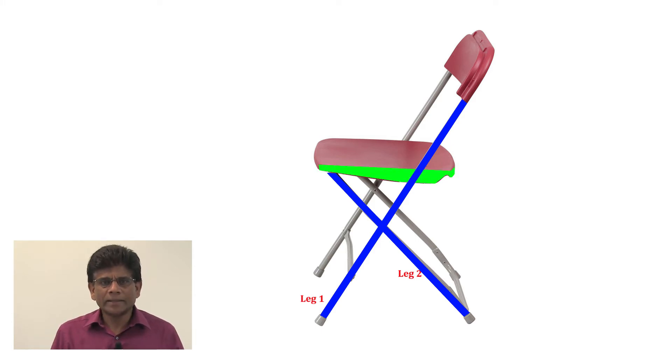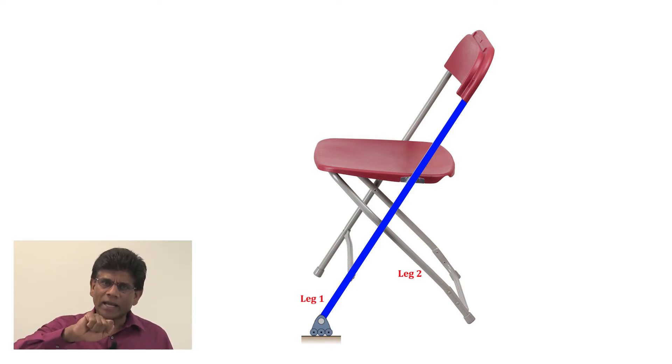If you look at the first leg, it is resting on the floor. We can assume that as a roller support, so there is going to be a support reaction. This leg is also connected to the second leg with a pin joint, so we know that there are two support reactions there as well.